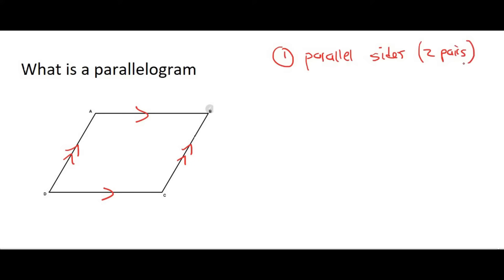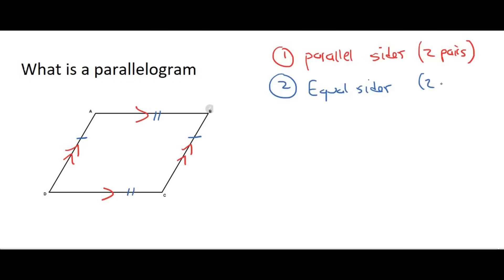We can also say that the opposite sides are equal in length. So this side and that side, and these two sides, are equal in length. So we can say: two pairs of equal sides.